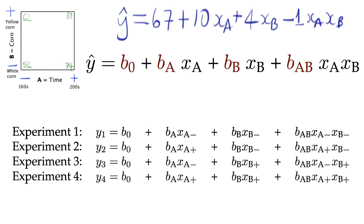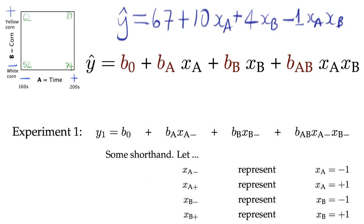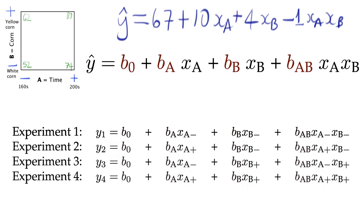Now take a look at what happens if I write that equation down for each of the four experimental points in the system. We can substitute in values for the coded units into this prediction equation. For the first experiment, for example, we would have y1 equals b0 plus bA times xA minus plus bB times xB minus plus bAB times xA minus times xB minus. That's because xA is at the minus level and xB is at the minus level for the first experiment. We can repeat this process for the other three points in the cube, as shown here on the screen.